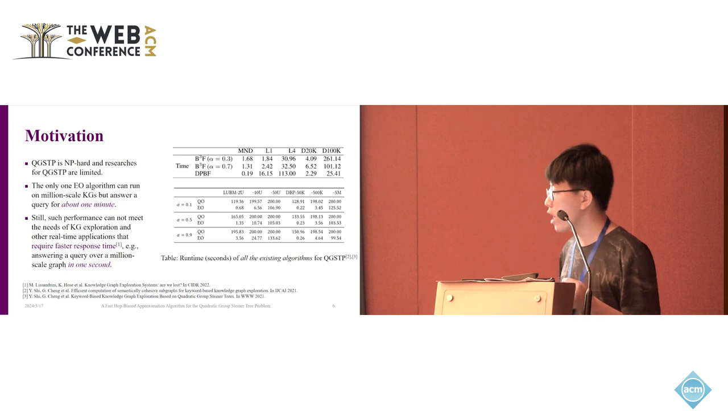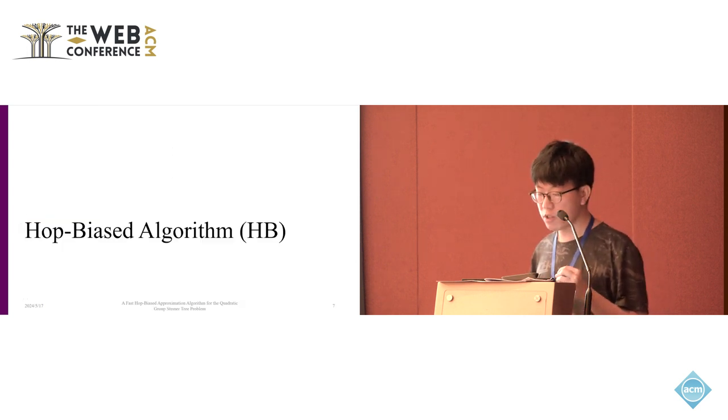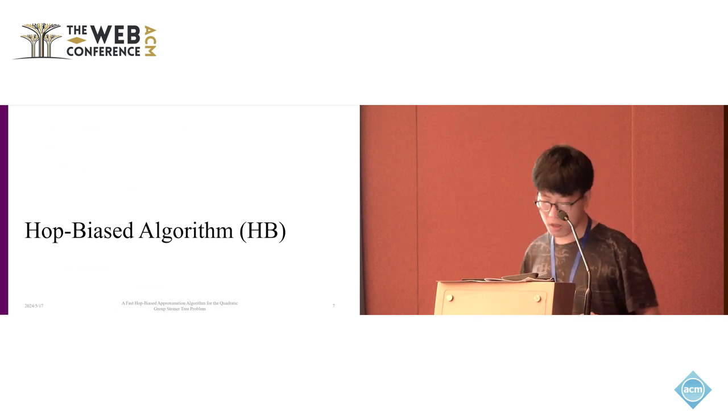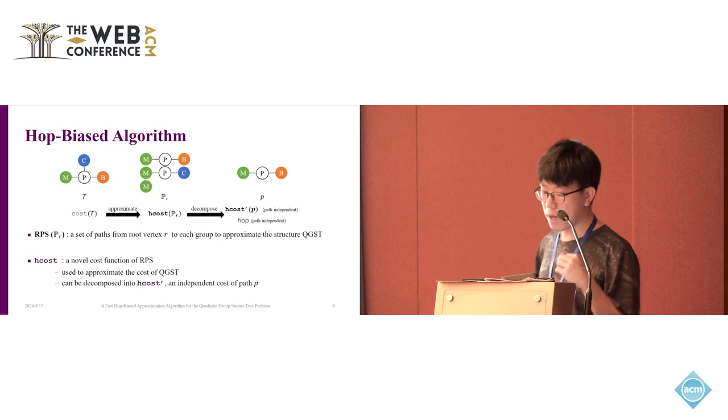For example, it can answer a query on the million-scale knowledge graphs in one second. So to address the above issue, we propose a fast hop-biased algorithm. We refer to it as HB. And here we show the main idea of the HB algorithm.